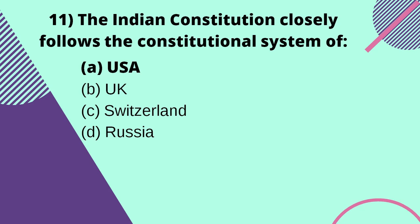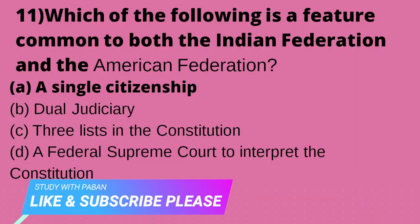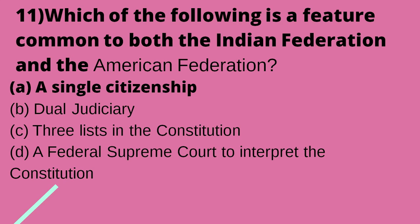The Indian Constitution closely follows the constitutional system of which country — USA, UK, Switzerland, or Russia? The right answer is option B — UK. Which of the following features is common to both the Indian Federation and the American Federation? Option A — single citizenship; option B — dual judiciary; option C — three lists in the Constitution; option D — a federal Supreme Court to interpret the Constitution. The right answer is option D — a federal Supreme Court to interpret the Constitution.